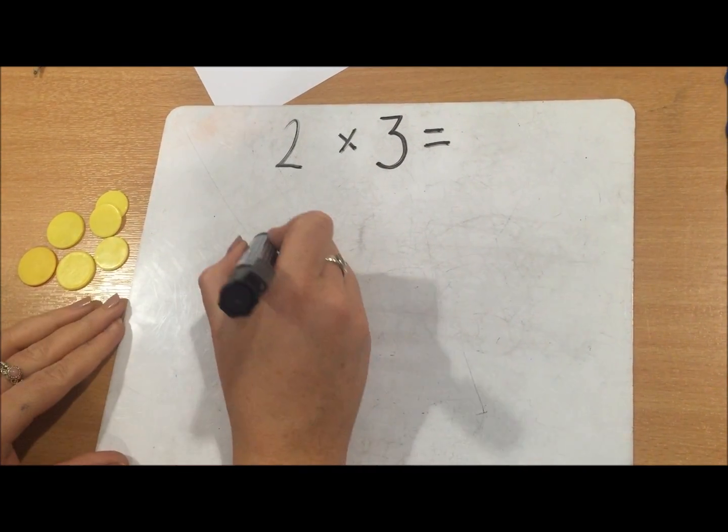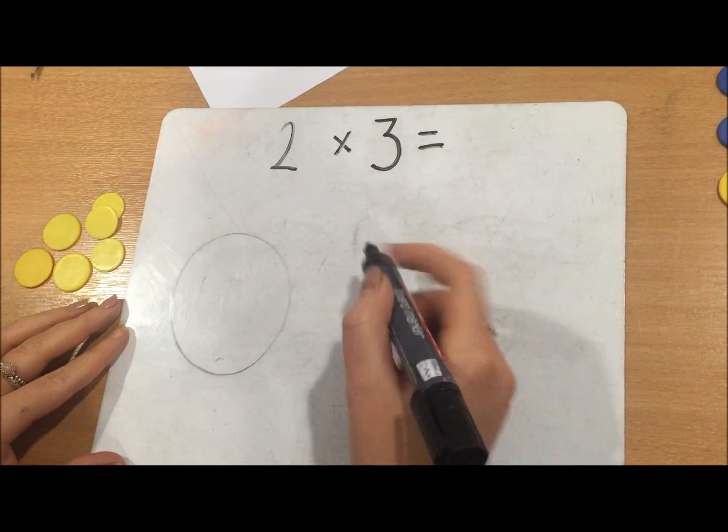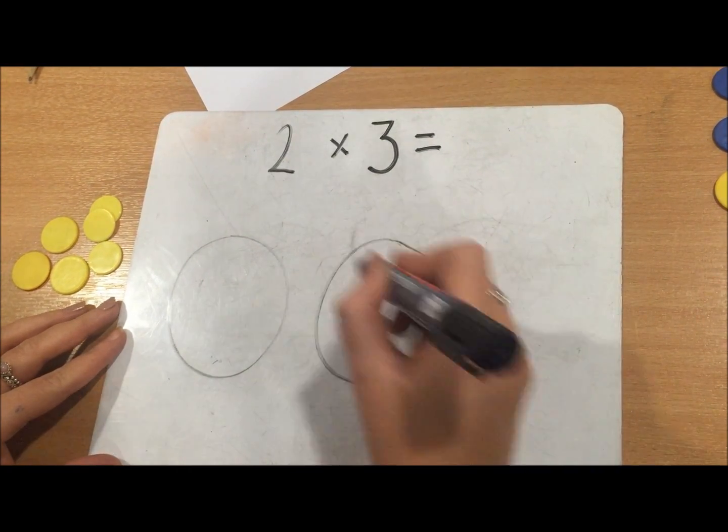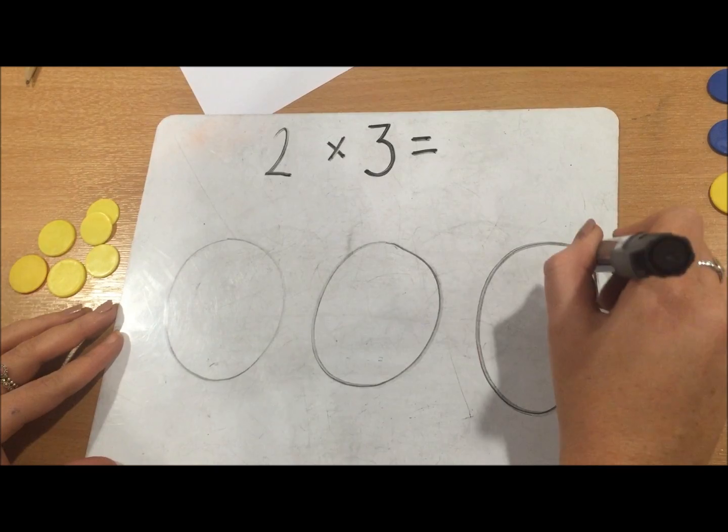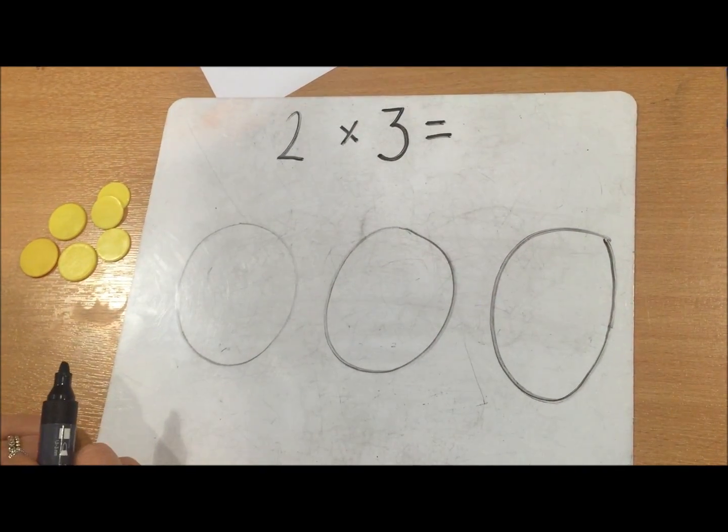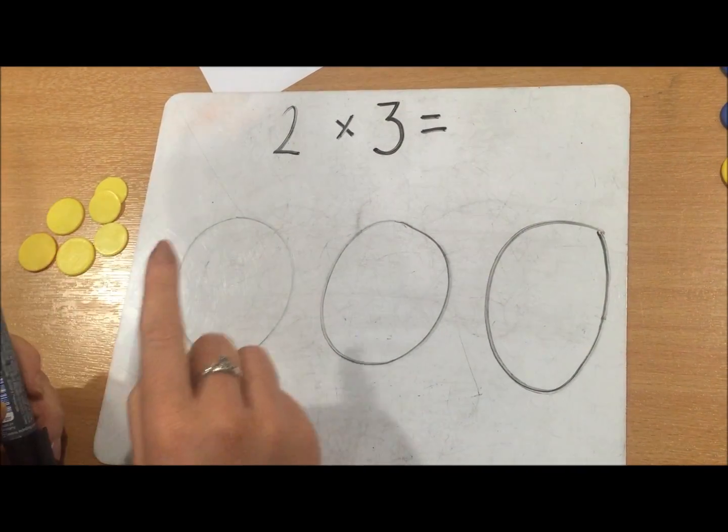three sets. So we've got one, two, three. We then need to put two counters in each set.